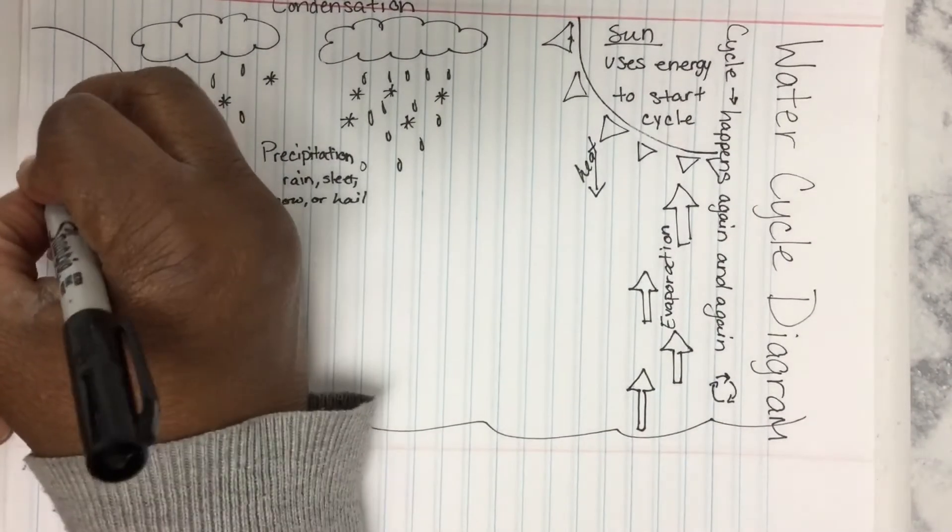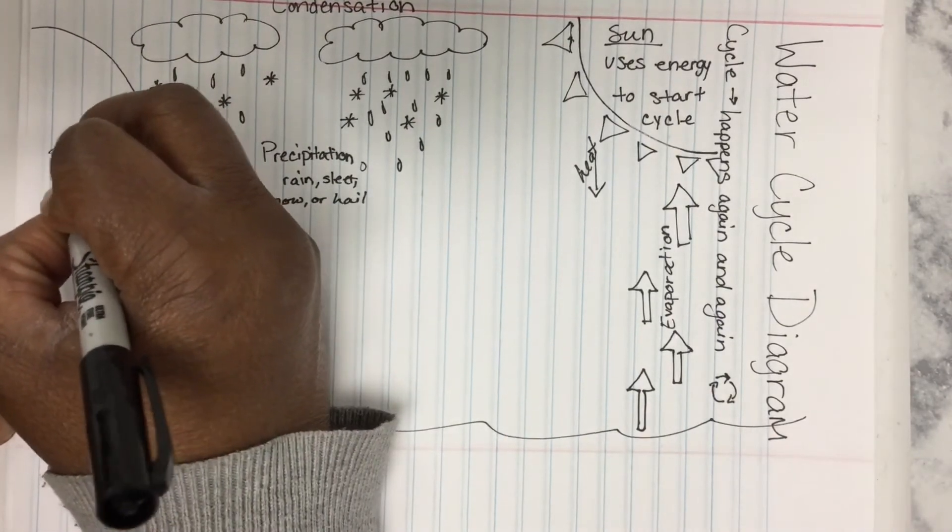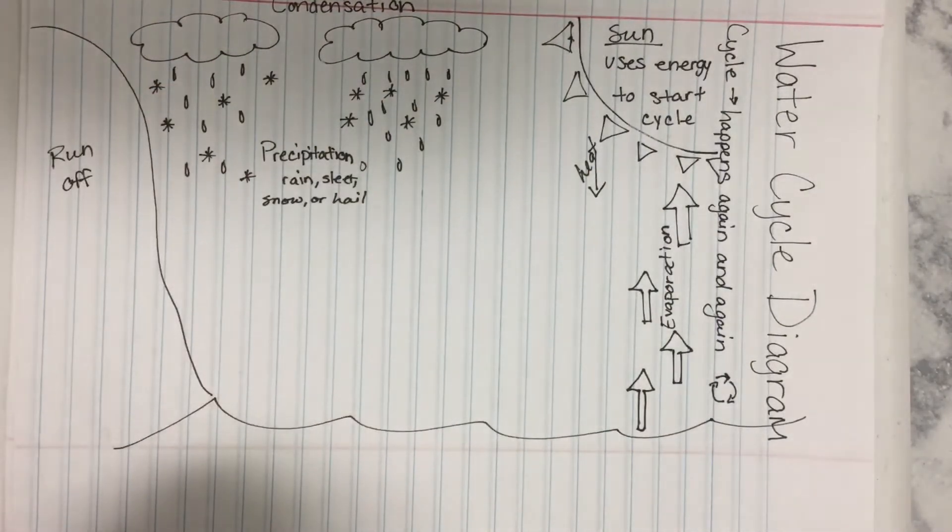So, runoff. This is just water moving down a hill. There's nothing special about it. Water moving down a hill.